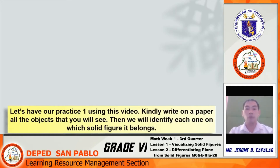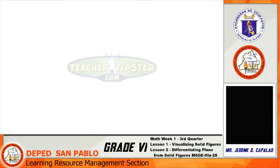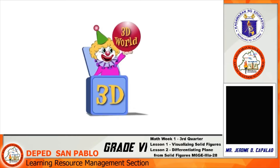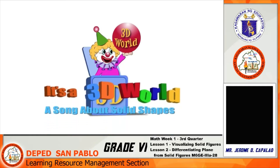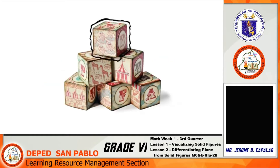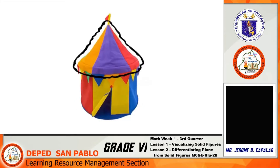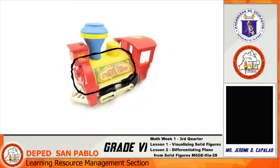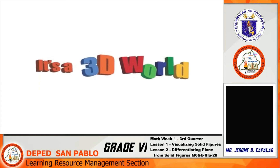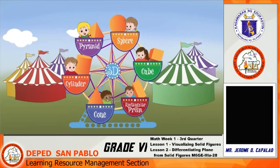Let us have our Practice 1 using this video. Kindly write on paper all the objects that you will see, then we will identify each one and determine which solid figure it belongs to. It's a world of cubes, it's a world of spheres, it's a world of cones and of pyramids. There are cylinders and rectangular prisms — yes, it's a 3D world after all.